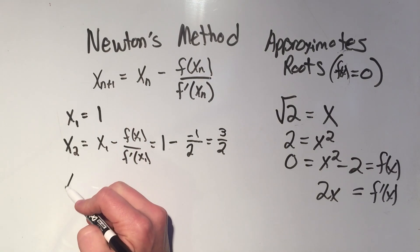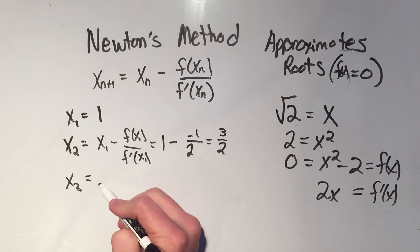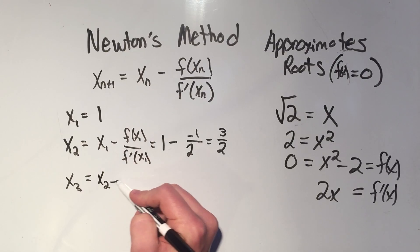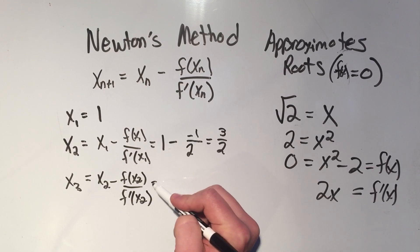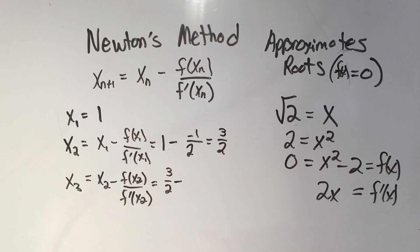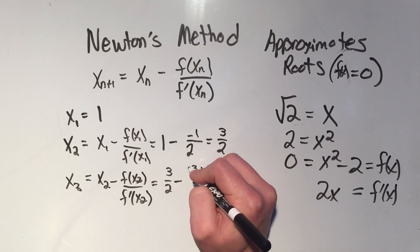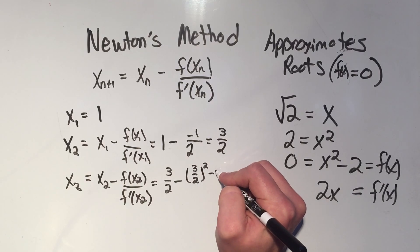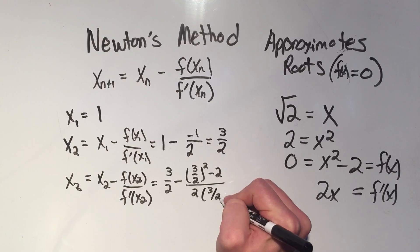Now I find x3. Your professor might make you do 4 or 5 iterations, or maybe 3. x3 equals x2 minus f(x2) over f'(x2). So that's 3/2 minus — this might get a little messy — 3/2 squared minus 2, all over 2 times 3/2.